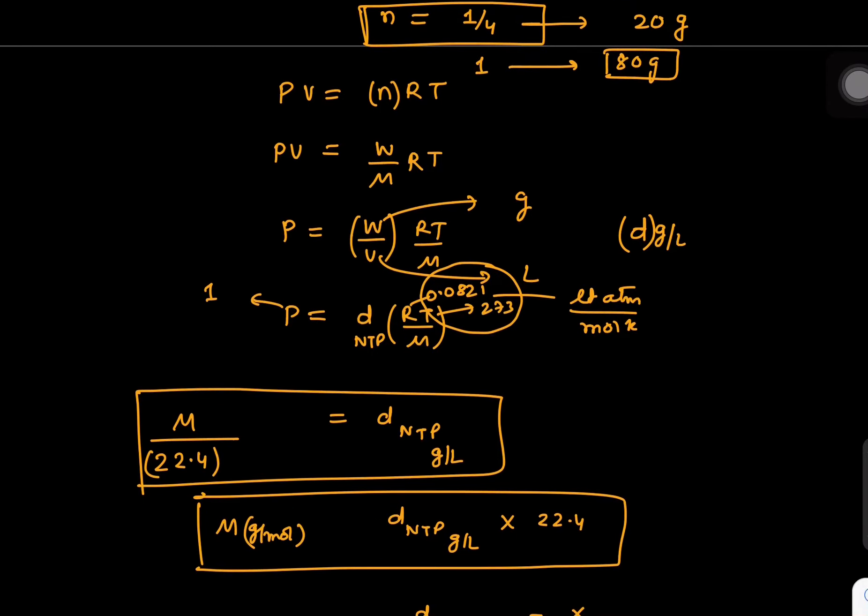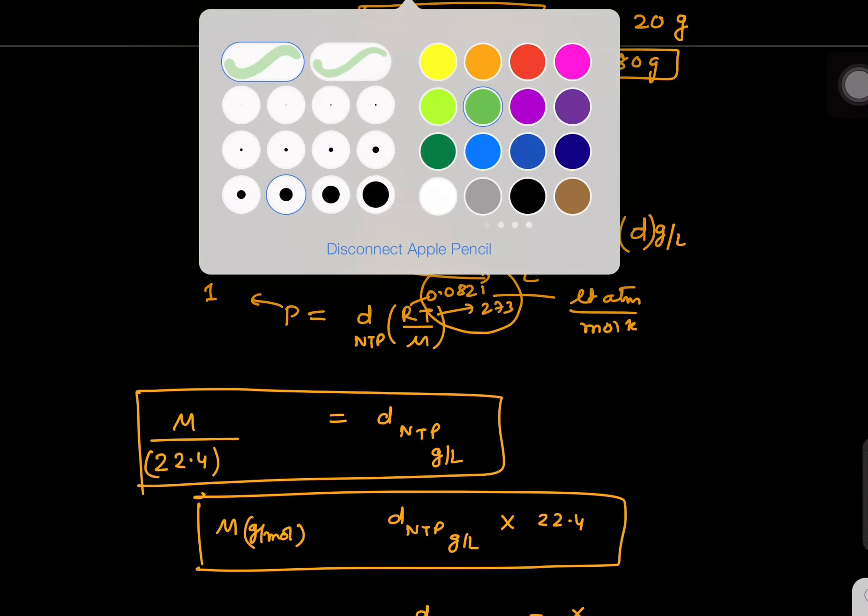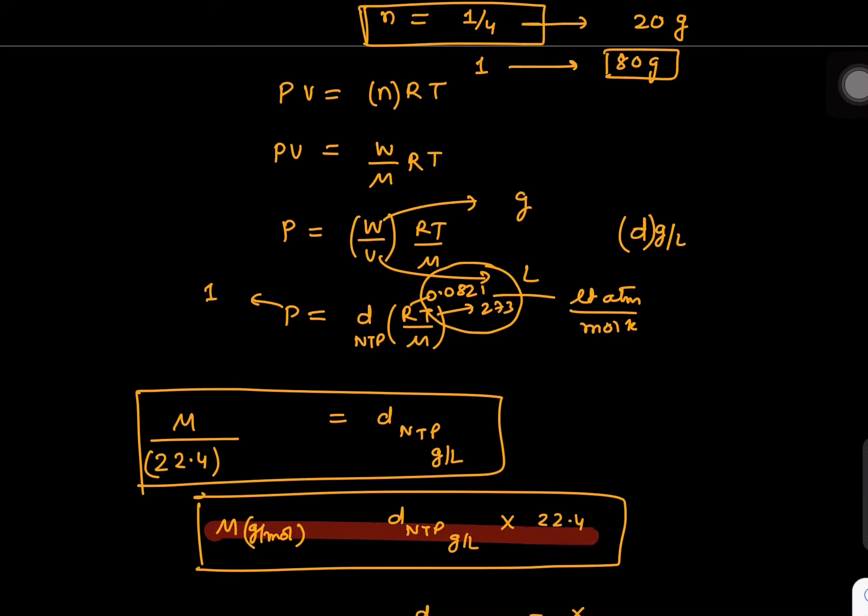If you put all these things together, you can end up with this particular result where molecular weight of gas in grams per mole equals density of gas in grams per liter times 22.4.